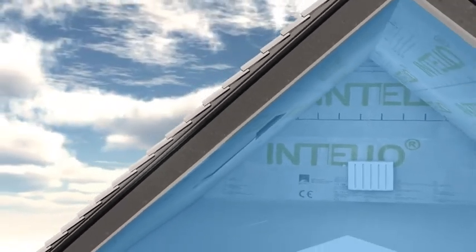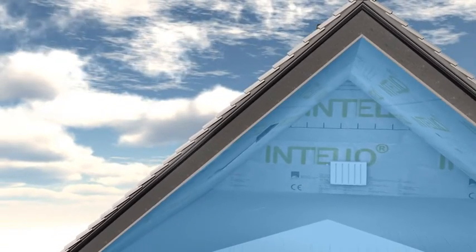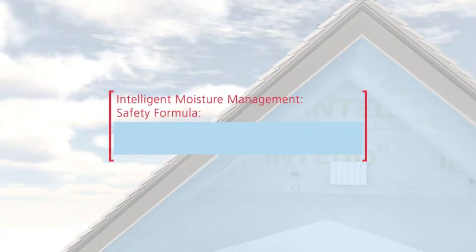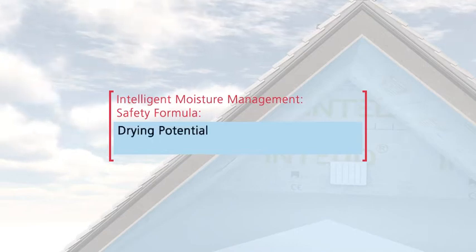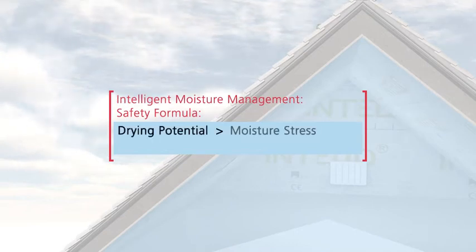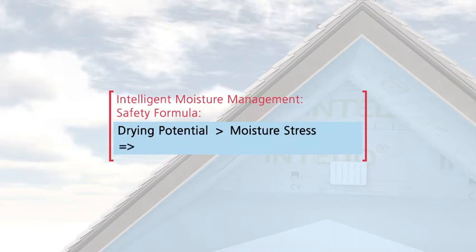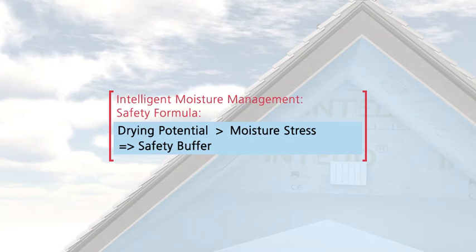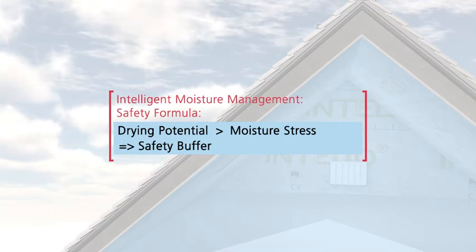There's one simple rule that has to be followed to make sure that a thermal insulation structure is safe. To reliably prevent structural damage, the drying potential must always be higher than the maximum moisture stress. The greater the difference between the moisture stress and the drying potential, the greater the safety buffer for building owners, planners, and builders.